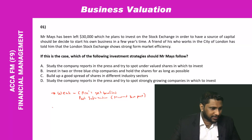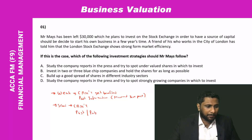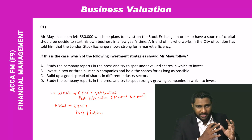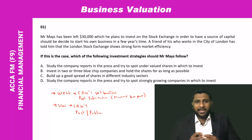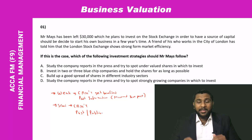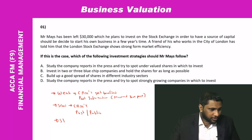The next one is semi-strong form efficiency. Under semi-strong form efficiency, if you can't get benefited by having past information as well as all publicly available information — such as financial statements — that efficiency level is called semi-strong efficiency. The final one is strong form efficiency.